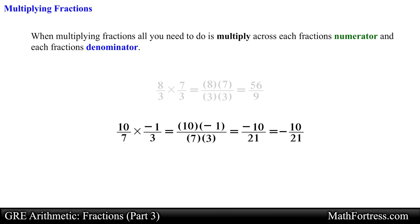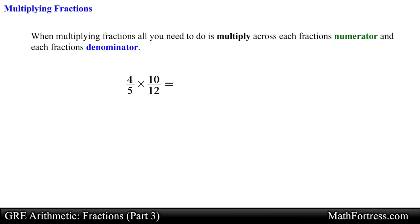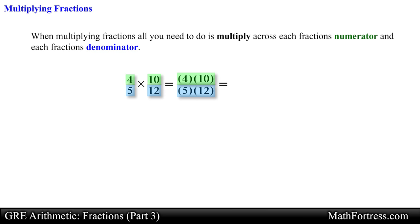Now let's try an example where we need to reduce the fraction. Say we want to multiply 4 fifths times 10 over 12. We first multiply each fraction's numerator and denominator across. Doing that we obtain the fraction 40 over 60. Notice that we can simplify this fraction since both 40 and 60 have a common factor — both end with 0 — so we can divide both of these numbers by 10. Dividing numerator and denominator by 10 yields the fraction 4 sixths.